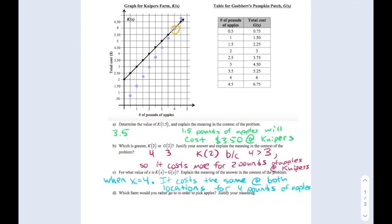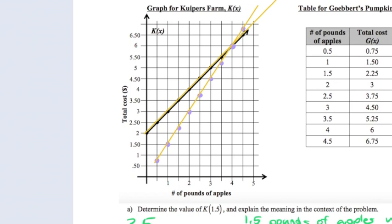However, once we get to four pounds, now the cost is the same so it doesn't really matter which one you go to. If we were to extend this graph of g(x) and extend this graph of k(x), you would start to notice that beyond that four, the g values are now always going to be greater than the k values, which means Gobert's is going to start getting more expensive than Kuipers.